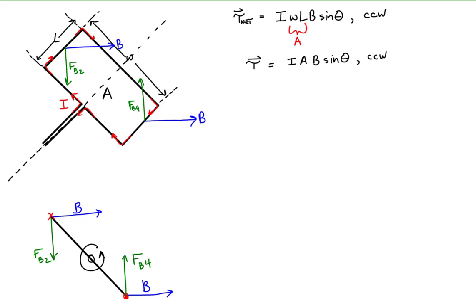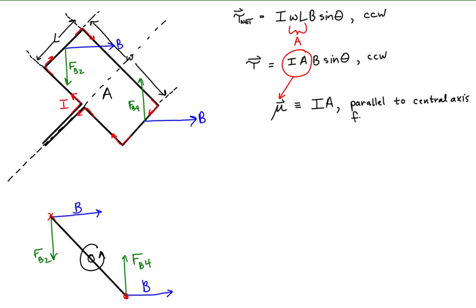We've now arrived at a very important result. Notice the product of the current and the area of the loop, I times A. This product commonly appears in calculations involving current-carrying loops. From this, we define the magnetic dipole moment μ to equal the product of the current and the loop's area. The magnetic dipole moment is a vector whose direction is parallel to the magnetic field created by the loop's current, lying on the central axis of the loop from south to north.